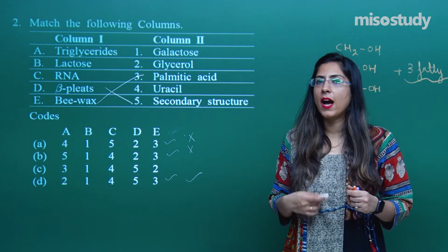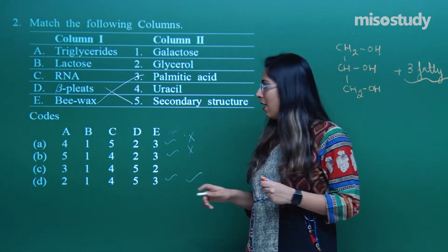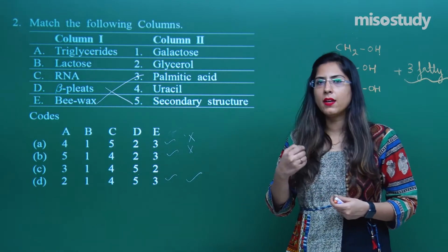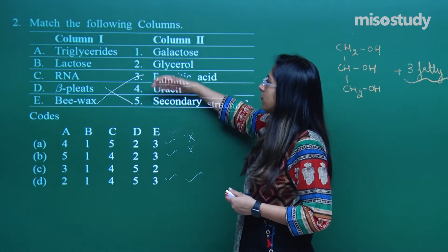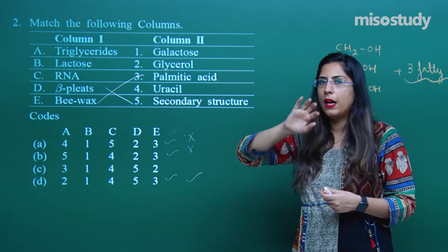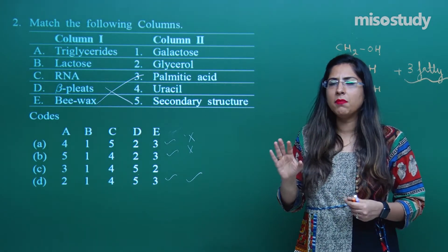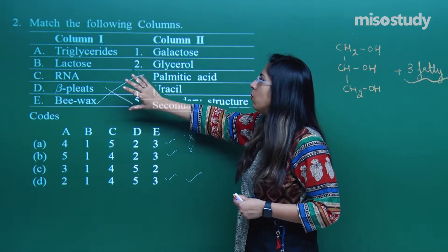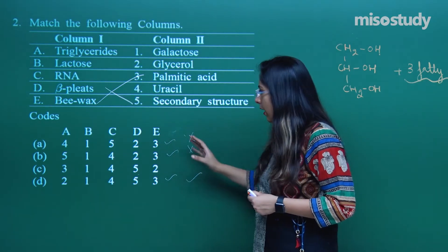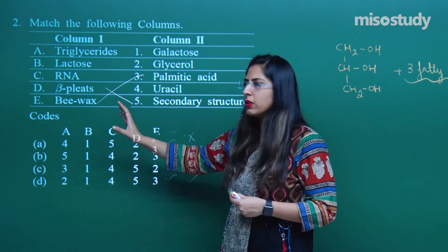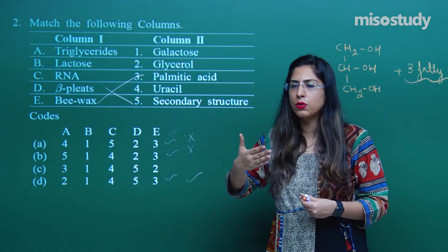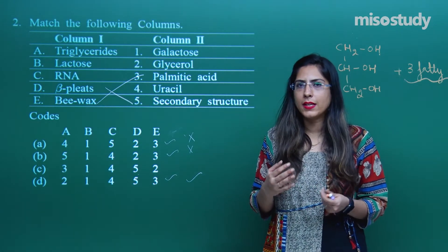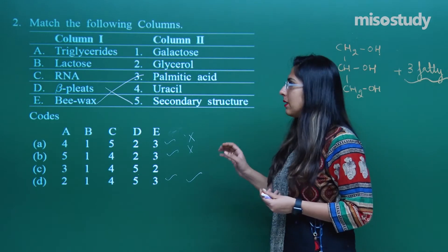I approached from the last option to narrow down the answer. When certain options are given in columns and you know only about 2 or 3 of them, that does not mean you cannot attempt the question. From the 1 or 2 options you know, try to match column 1 and column 2 and eliminate wrong options. Sometimes you will get the correct answer using this elimination approach.